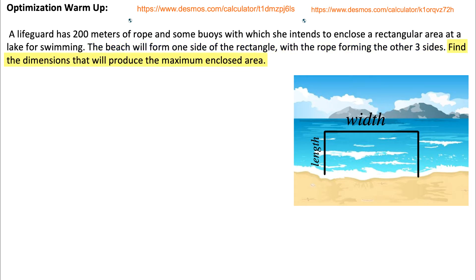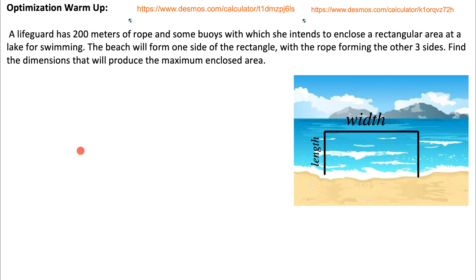Find the dimensions that will produce the maximum enclosed area. Our main goal is to figure out the maximum area. To do that, we need an area function and then figure out when that function is at a max. So far in this unit we've learned that we can use calculus to find when functions are at a max by using critical numbers and a first or second derivative test.